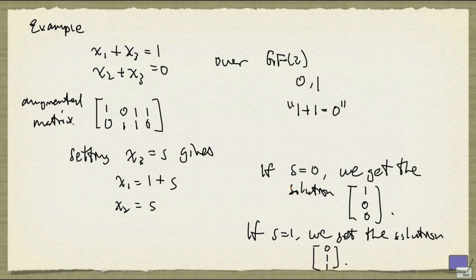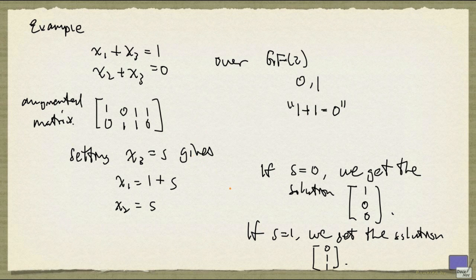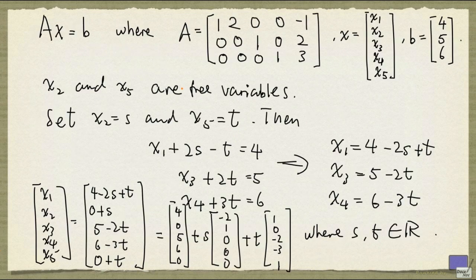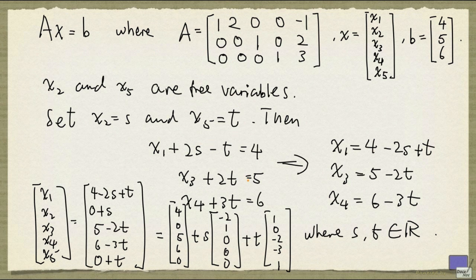So here's an example with at least one free variable, but you only get finite number of solutions because we're working over a finite field. And in general, if you have free variables for a system defined over a field with infinite elements, like this one, then you're going to have infinitely many solutions. And that doesn't give us any problem in describing the set of solutions succinctly. Thank you.